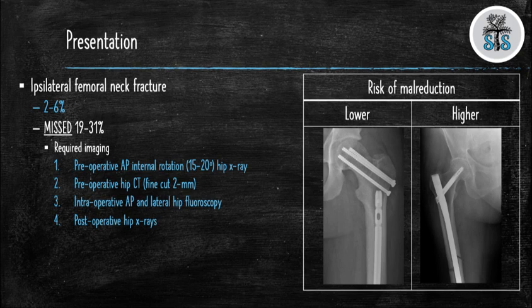In their study, they obtained preoperative AP hip x-rays internally rotated 15 to 20 degrees, a preoperative fine-cut CT scan of the hip, intraoperative AP and lateral fluoroscopy of the affected hip, and postoperative x-rays of the hip. They internally rotated the hip 15 to 20 degrees because the femoral neck is anteveterd 15 to 20 degrees, which allows for the best view of the femoral neck.